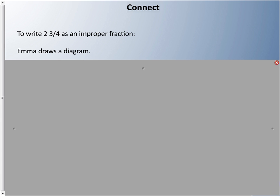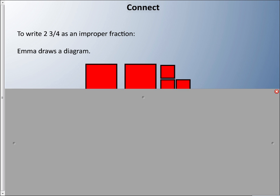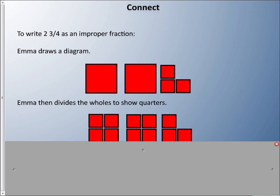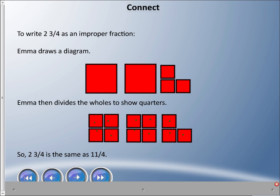You could use a diagram. Here's two and three quarters, and what you could do is divide all those wholes into fourths. You can count how many there are: one, two, three, four, five, six, seven, eight, nine, ten, eleven. So I have eleven quarters.